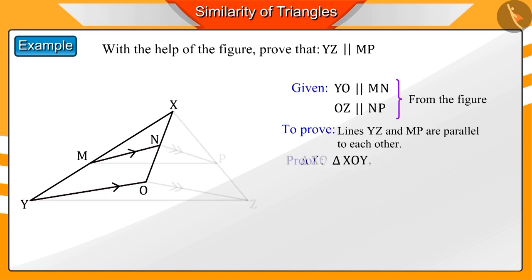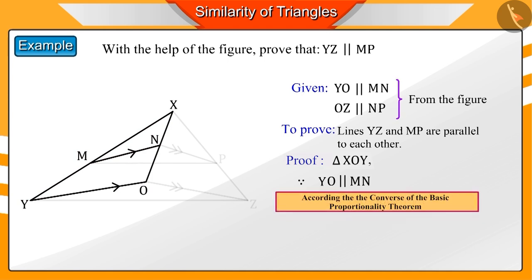If we observe the triangle XOY, we get to know that the line MN is parallel to the line YO. Hence according to the basic proportionality theorem, XM by MY equals XN by NO, which is represented by equation 1.